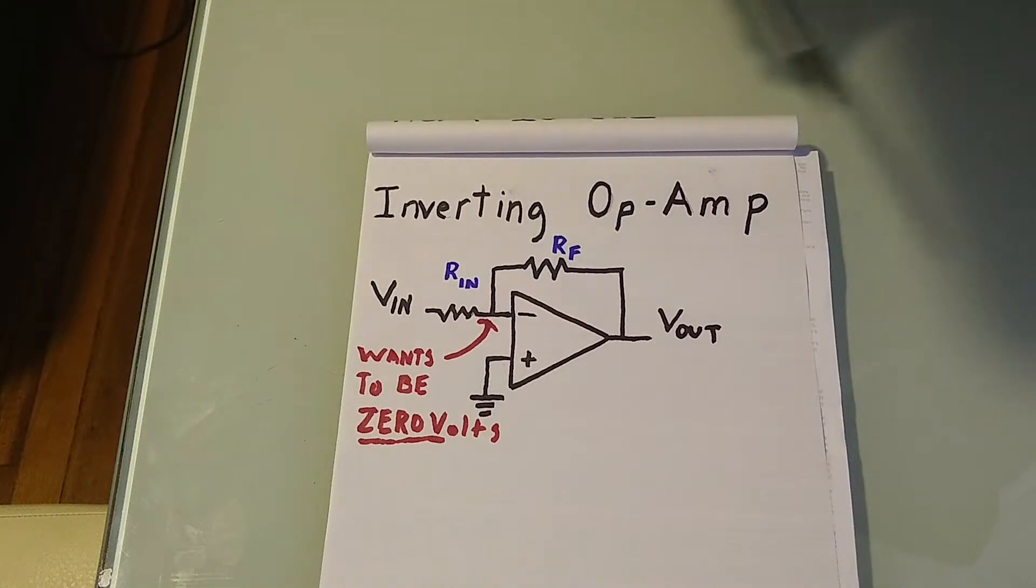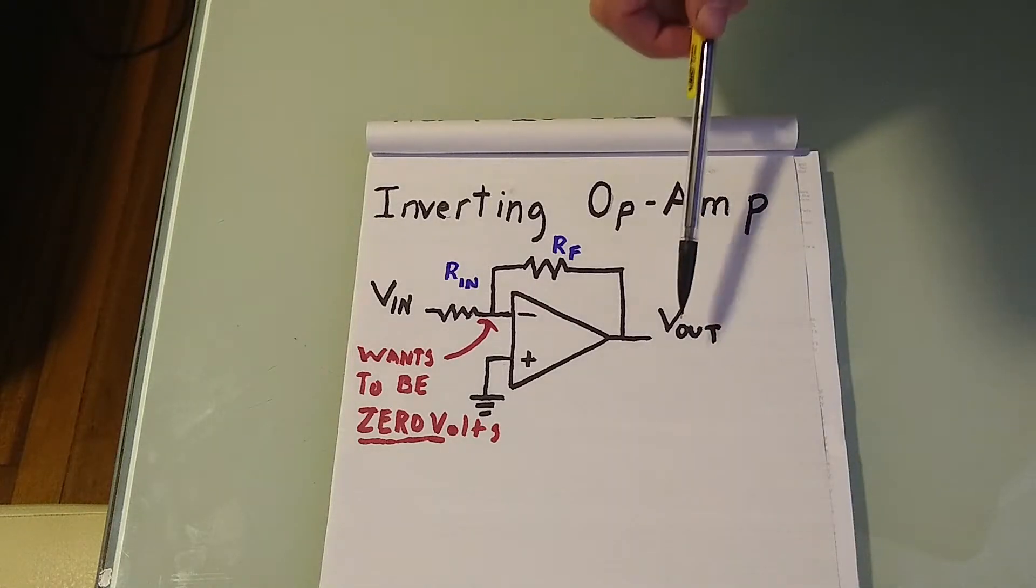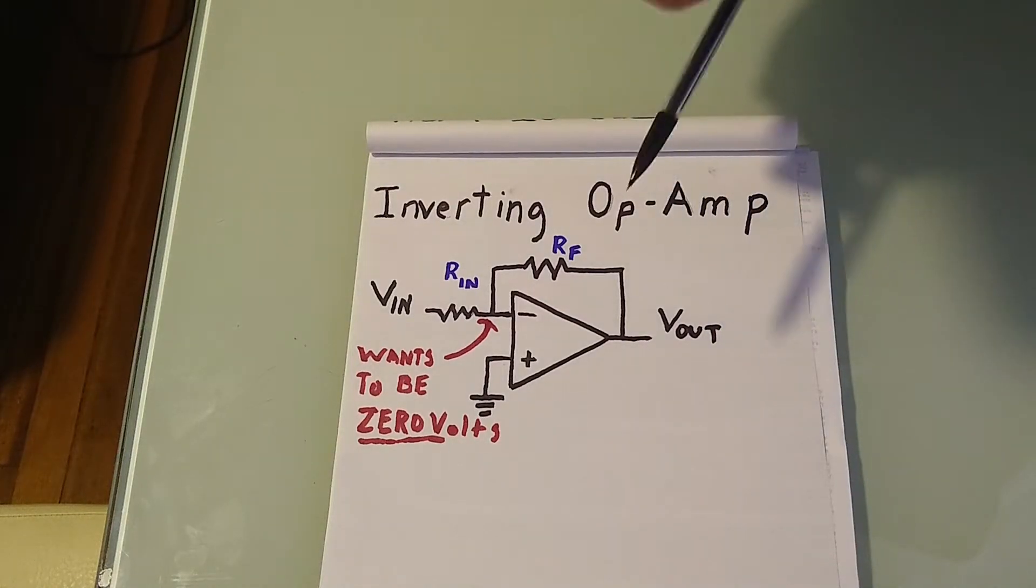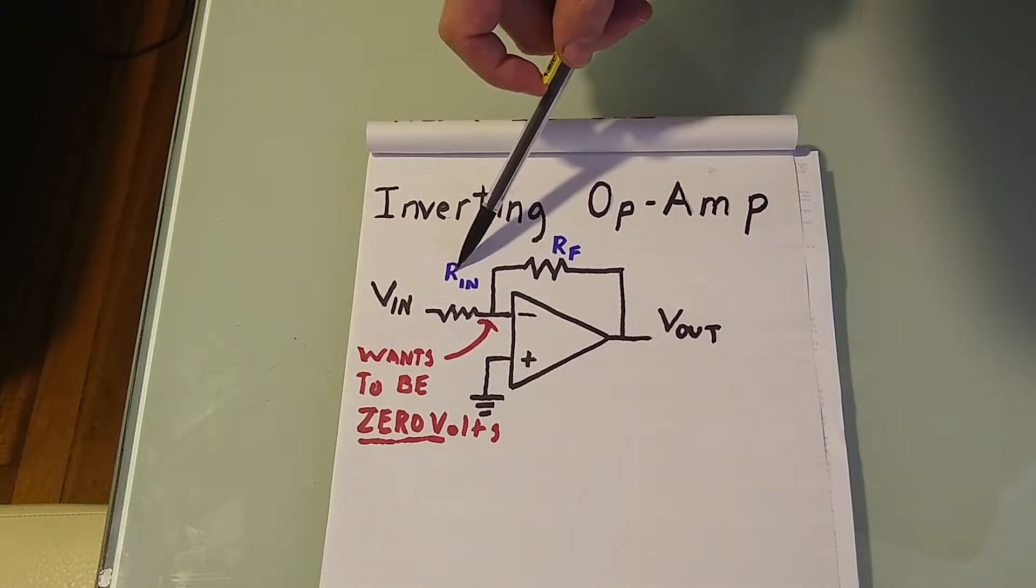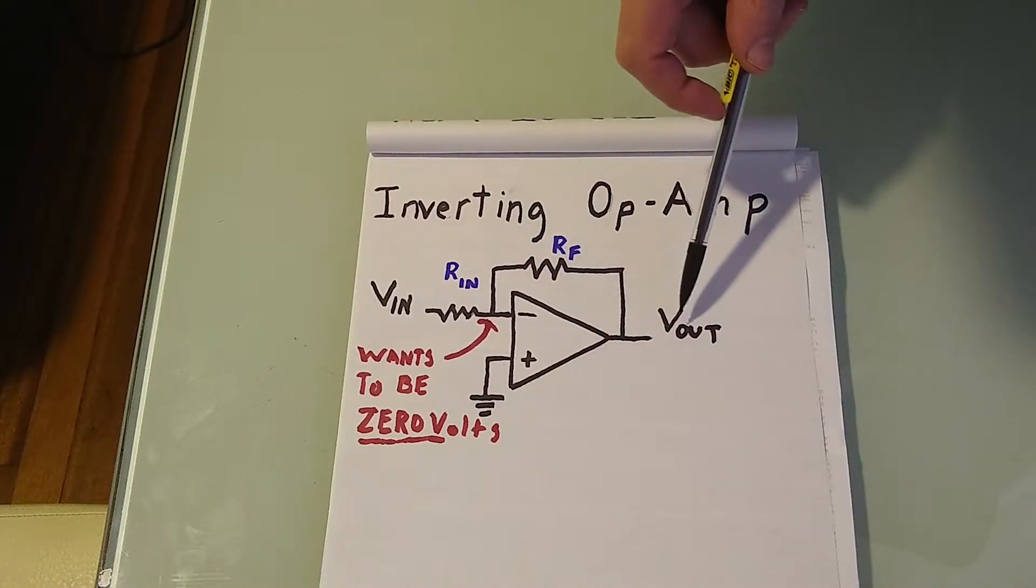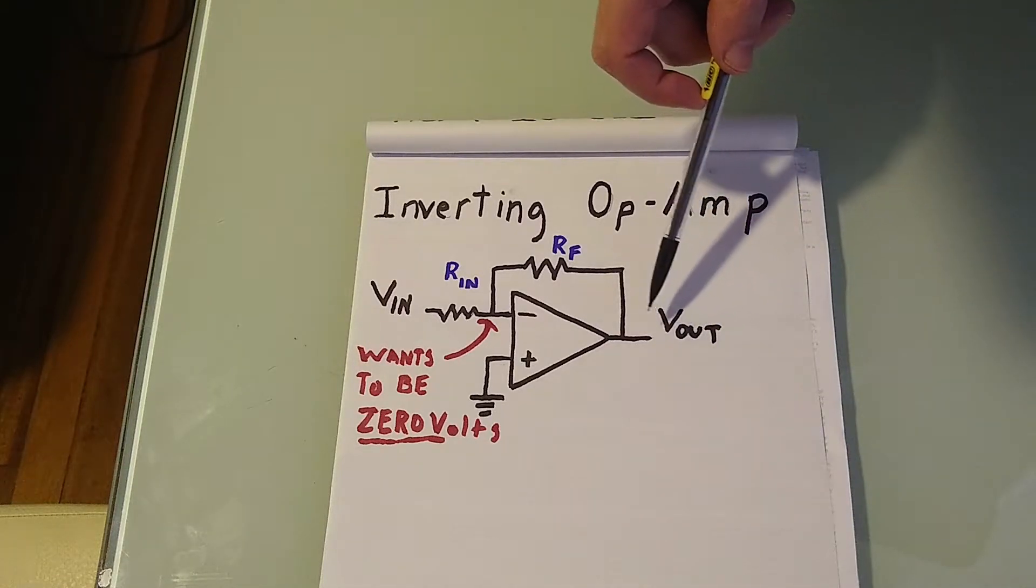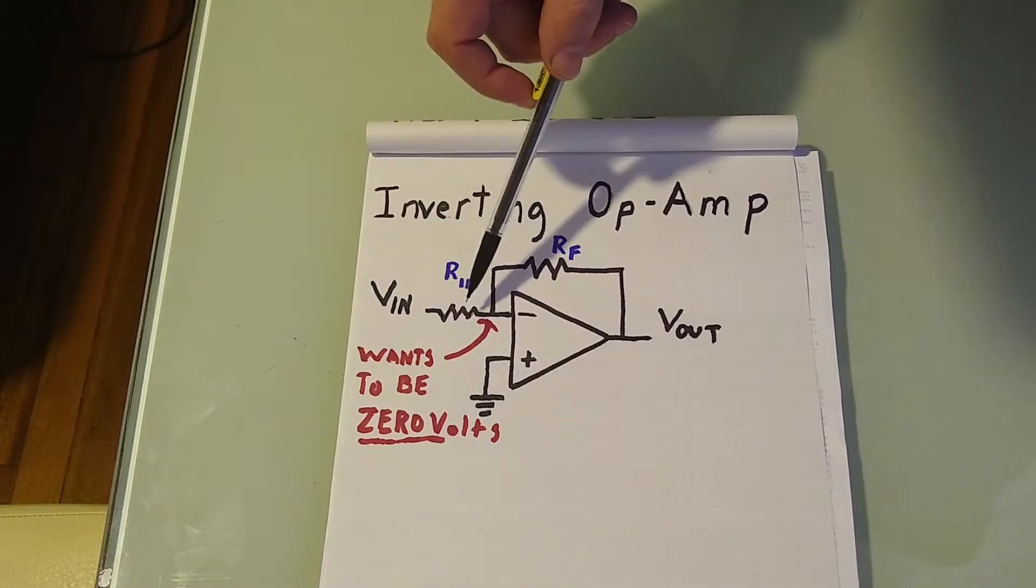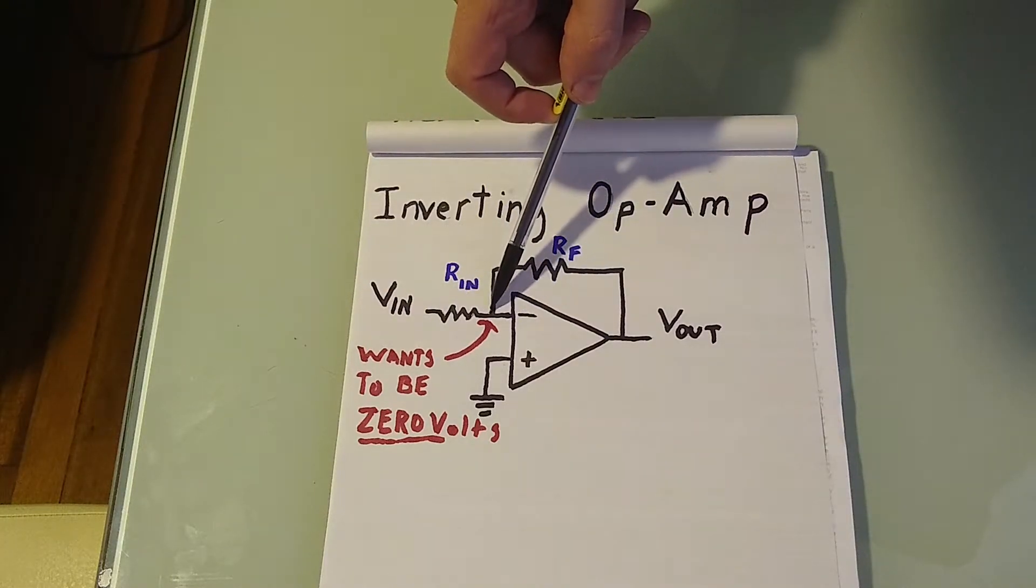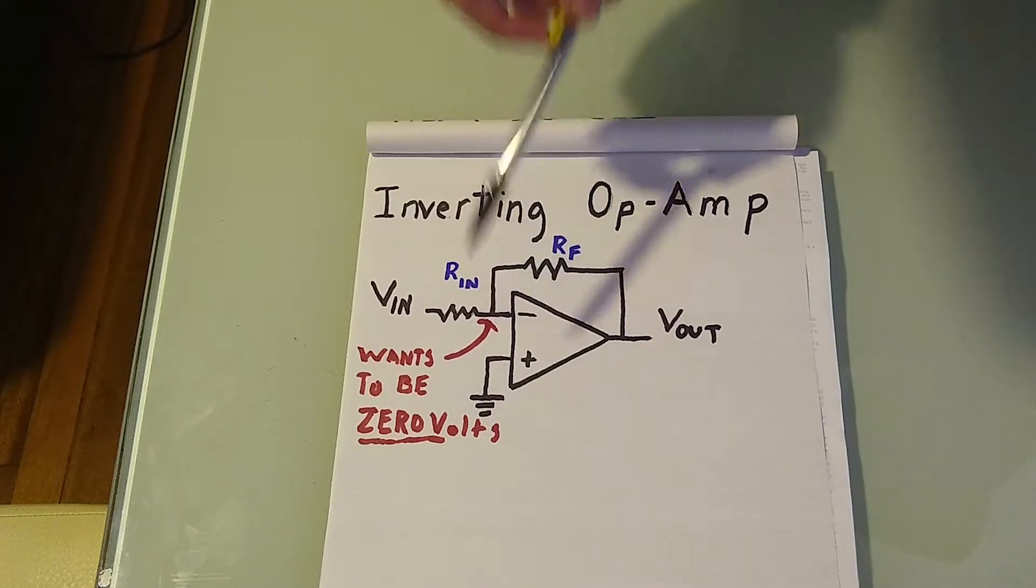But if Rf is larger than Rin, this Vout voltage will have to be a more negative number. So if this Rf is twice that of this Rin, this Vout would have to be negative two volts to compensate for this positive one volt, thereby leaving this junction at zero volts.